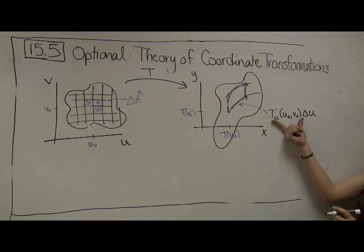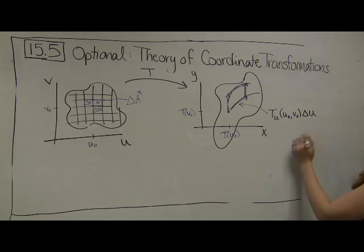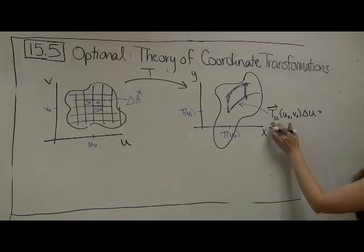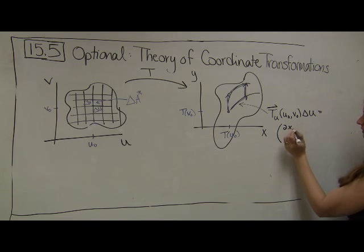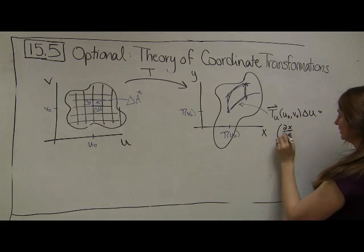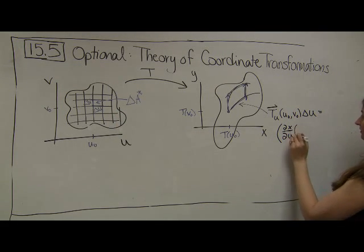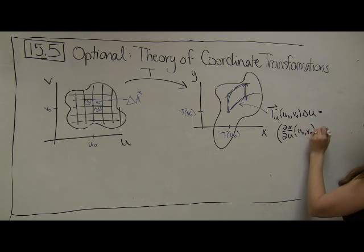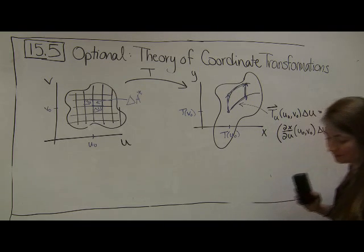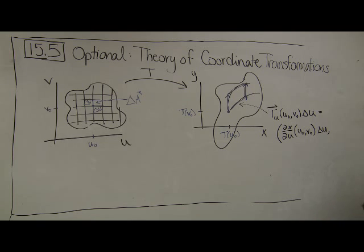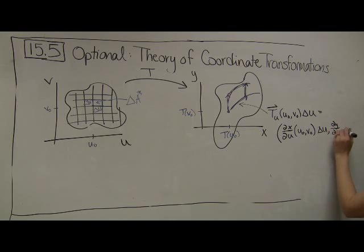What am I talking about when I say it's the derivative with respect to my T function? If I write this out longhand as a vector, this vector is going to have an X component given by the partial derivative of my X coordinate, dx/du, evaluated at U-naught, V-naught, times delta U, and a Y component given by dy/du at U-naught, V-naught, times delta U.